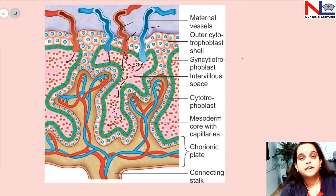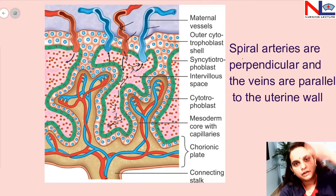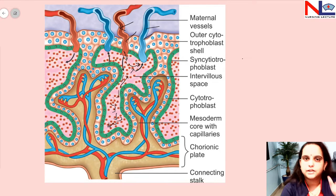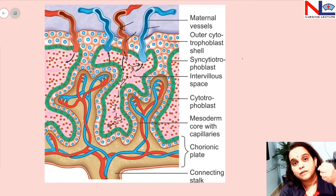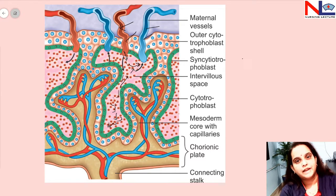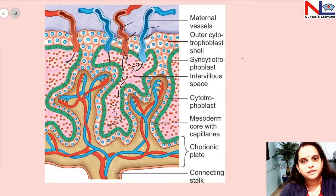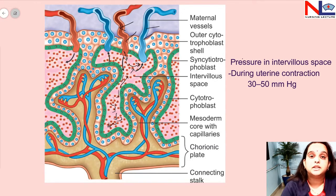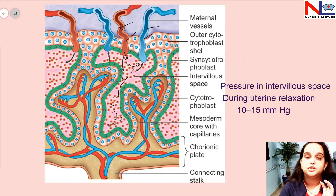The spiral artery is perpendicular to the uterine wall and the spiral vein is parallel to the uterine wall. So at the time of contraction, the arteries remain open and blood flow is continuous, though slightly slower. The blood from the artery remains in the intervillous space during contraction, allowing the fetus to receive oxygen and nutrients and exchange waste. Once contraction ends and relaxation begins, the veins reopen and blood drains out. During contraction, pressure in the intervillous space is about 30 to 50 mmHg; during relaxation it is about 10 to 15 mmHg.